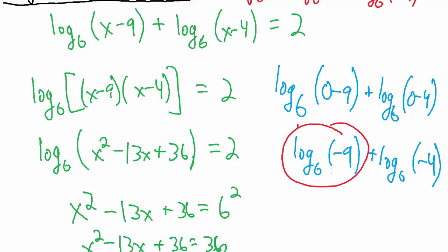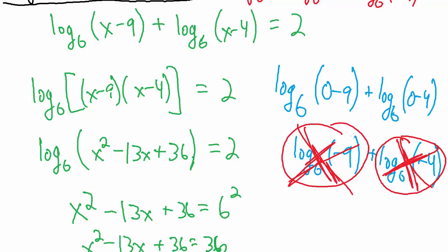So we cannot have base 6 log of negative 9 and we didn't actually even need to look this far but we also cannot have base 6 log of negative 4. So this is totally not allowed and what that tells us is that x equals 0 is actually not a solution.